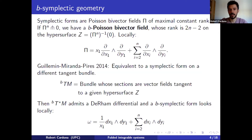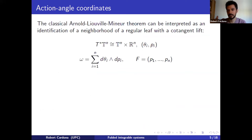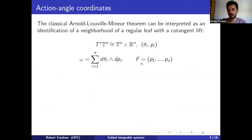Let me speak about action-angle coordinates. The classical Arnold-Liouville theorem can be interpreted as saying that near a regular fiber of your integrable system, the neighborhood is isomorphic to T*Tⁿ — a cotangent lift of the standard torus action. The two-form can be written in a very nice way, and your integrable system gives just the action coordinates in the fibers.